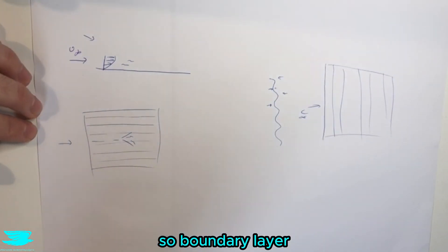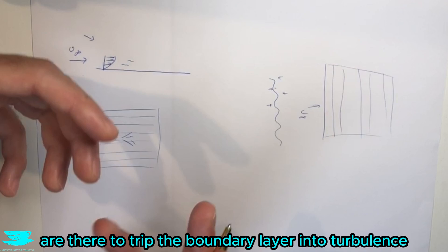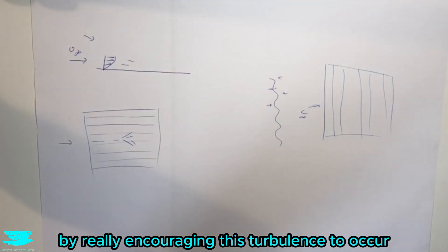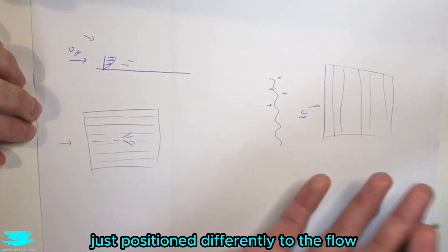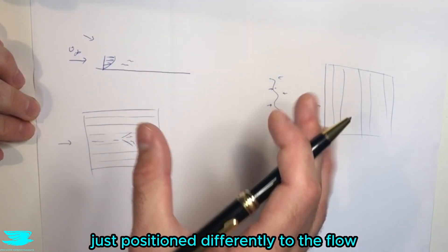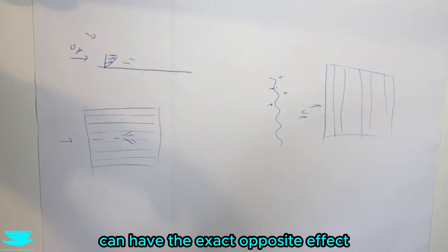trip. So boundary layer trips are there to trip the boundary layer into turbulence by really encouraging this turbulence to occur. So literally the exact same geometry just positioned differently to the flow can have the exact opposite effect from